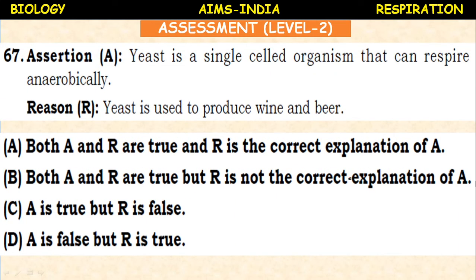Next question. Assertion — yeast is a single-celled organism that can respire anaerobically. Reason — yeast is used to produce wine and beer. Both assertion and reasoning are true and the reason is the correct explanation of the assertion.